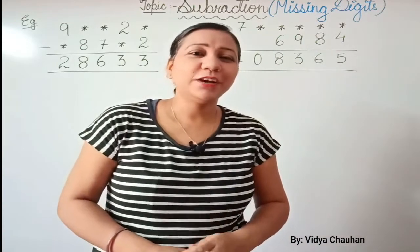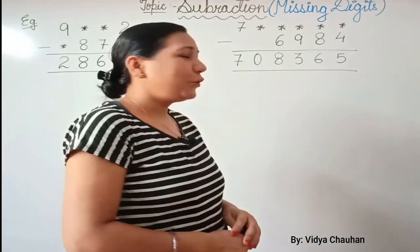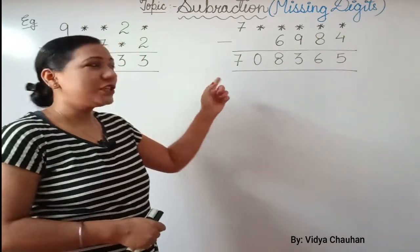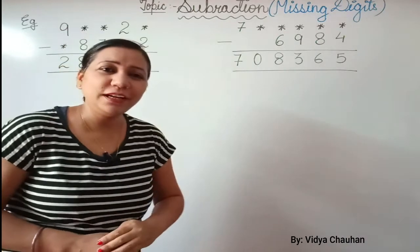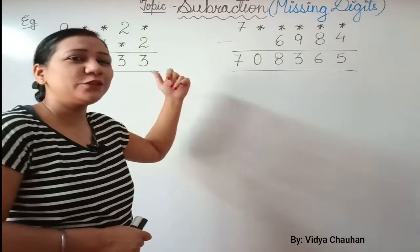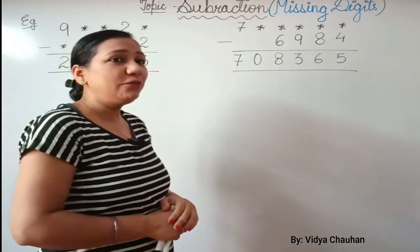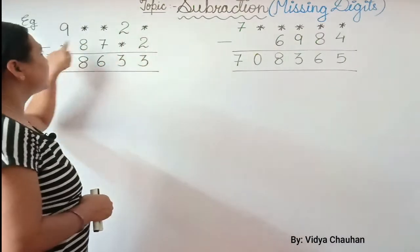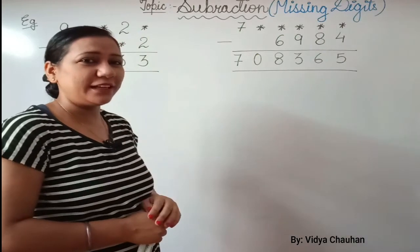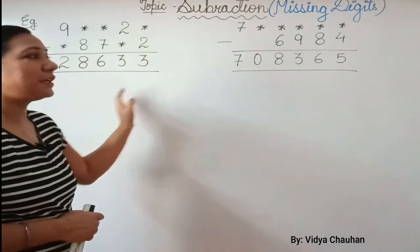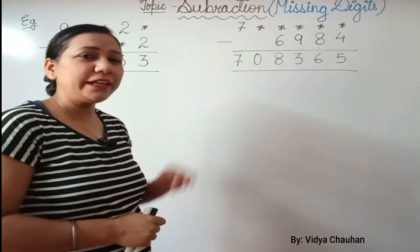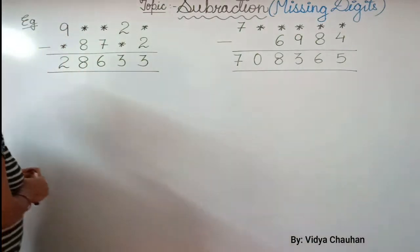Hello students, good morning! Continuing forward with the same chapter on subtraction, but today with a different topic: missing digits in the case of subtraction. As you can see, I have taken two examples in which there are some star symbols — star means these digits are missing. I'll tell you a very easy method to find these missing digits.